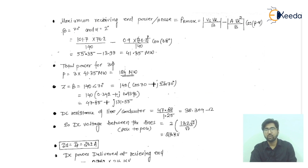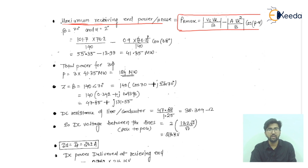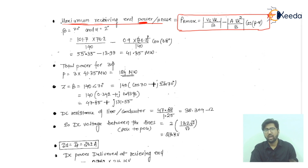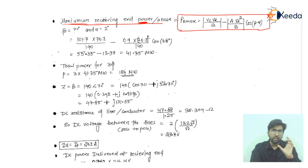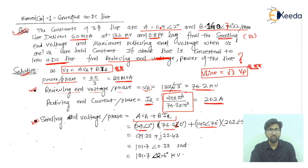For the maximum receiving end voltage, the formula is: P_max = (VS × VR / B) − (A·VR² / B)·cos(β − α). Here β comes from B = 140 ∠70°, so β = 70 degrees. Don't be confused — B is the parameter with angle 70°.